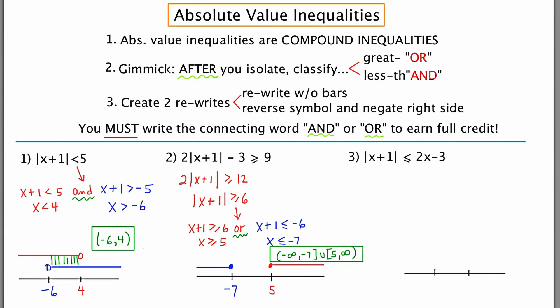In the last example, we have the absolute value of x plus one is less than or equal to two x minus three. Looking at this inequality symbol, I see this as an and problem, less than. My first rewrite is going to be x plus one is less than or equal to two x minus three. Subtracting two x from both sides, I get negative x is less than or equal to negative four, which means x is greater than or equal to four. Don't forget to flip the switch in that case.